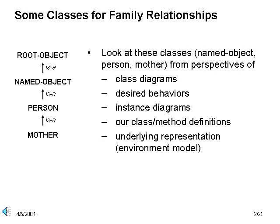Here's our type hierarchy. A mother is a kind of person, which is a kind of named object, which is a root object, so that we have a chain of superclasses but no multiple inheritance. We want to look at these classes from the perspectives we've already learned about: class and instance diagrams, some desired behavior, how we define these classes and methods in Scheme, and finally how our instances are represented under the covers in a Scheme environment model.